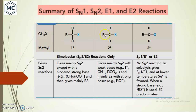When using substrates — methyl, primary, secondary, and tertiary halides — the type of nucleophile, substrate, solvent, and leaving group affect the possibility of substitution versus elimination. Methyl halide gives SN2, and primary halide can give SN2 or E2, mainly SN2, except when a hindered base is used, which favors E2.